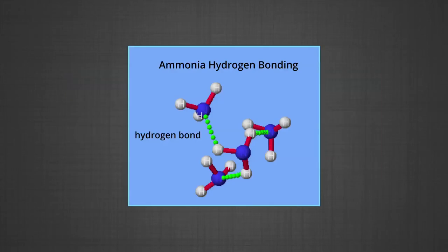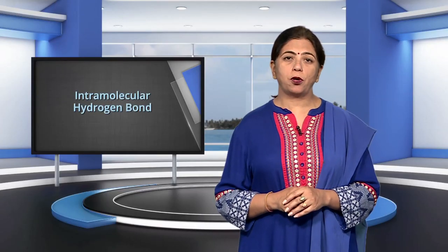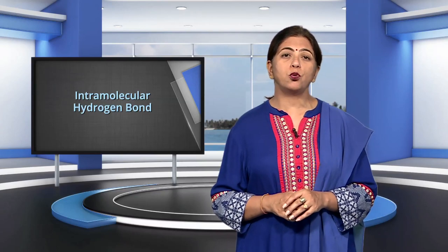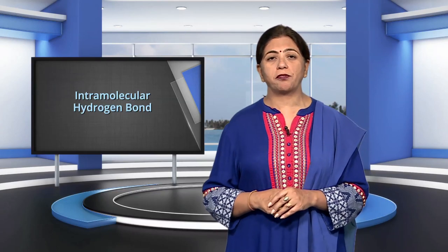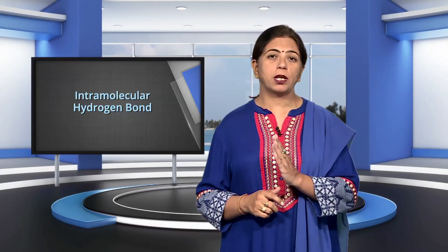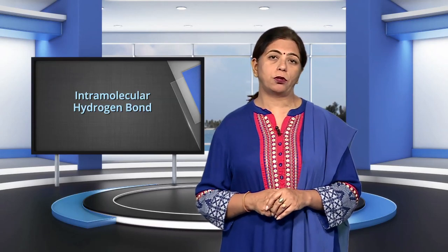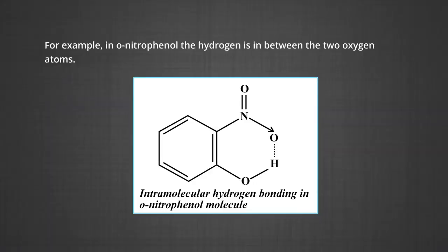You can see the structures on the screen. Intramolecular hydrogen bond is formed when a hydrogen atom is in between two highly electronegative atoms — fluorine, oxygen and nitrogen — present within the same molecule. For example, in ortho-nitrophenol, the hydrogen is in between two oxygen atoms. In the figure, you can see the hydrogen bond within the same molecule.